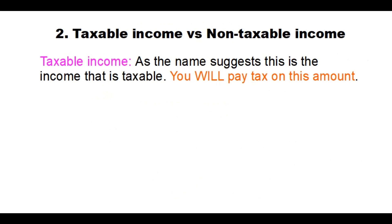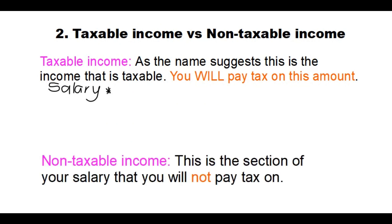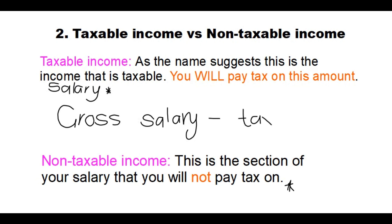Your net salary is your salary after deductions. On your salary you're going to have to pay tax. You also need to know the difference between taxable income and non-taxable income. Taxable income is income like your salary that you pay tax on. Non-taxable income is where you receive money but don't pay tax on it. To determine your taxable income, the formula is: gross salary minus your taxable deductions equals your taxable income.